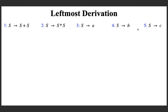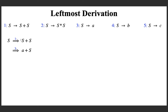We know that the derivation should start with the start symbol of the grammar. Suppose I apply production number 1 from the start symbol. So what I am getting is the RHS of production number 1, because S is going to be replaced with the RHS of production number 1. Now suppose I apply production number 3 on this S. Then what I am getting is the leftmost S in this sentential form is going to be replaced with the RHS of production number 3. So this capital S is replaced with small 'a'.